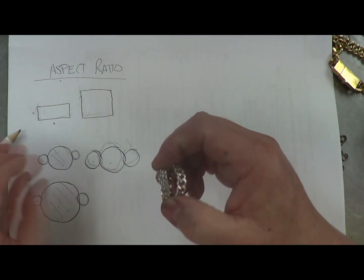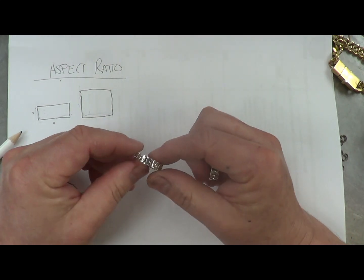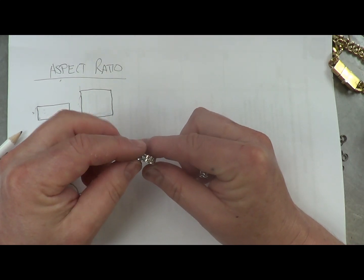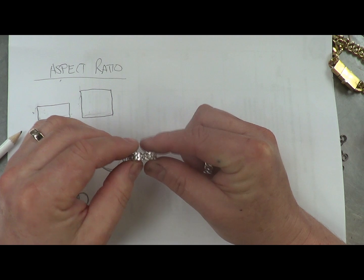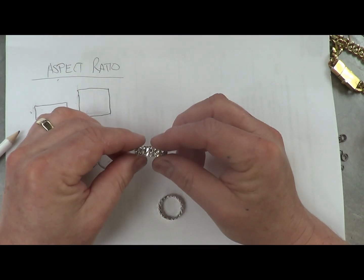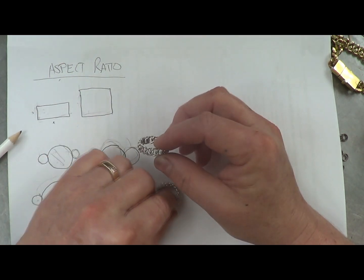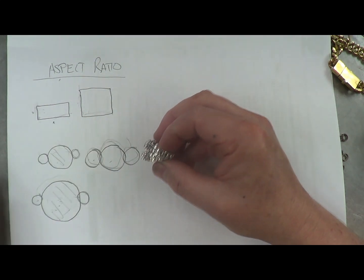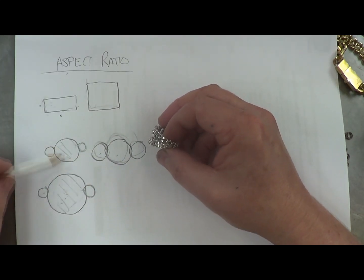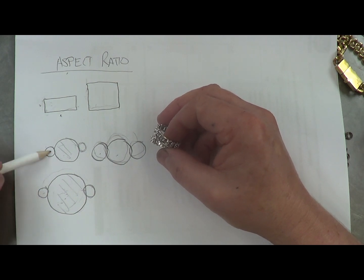So on this ring here, that's a very tight aspect ratio. There's hardly any gap between the links. This one's much more open. Both of them are one and a half millimetre diameter silver wire. So both of them have the same size wire,